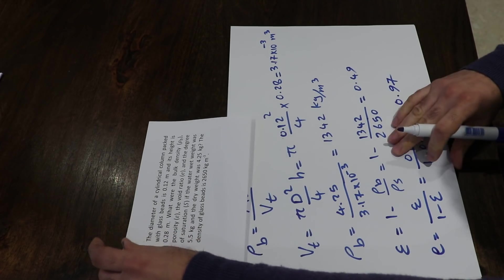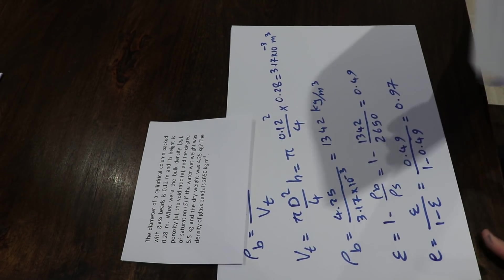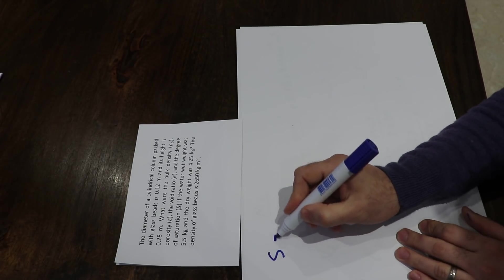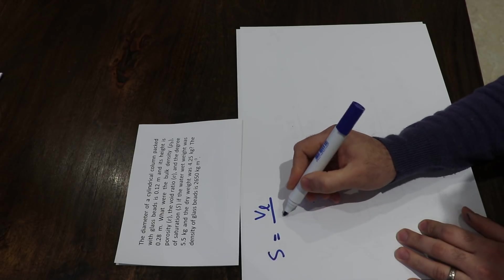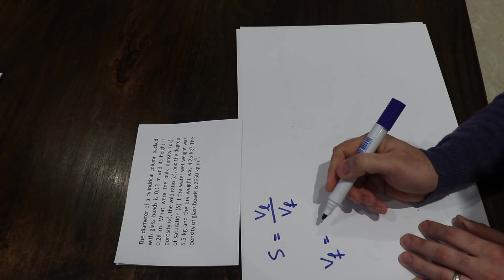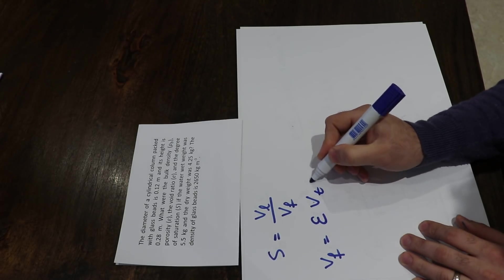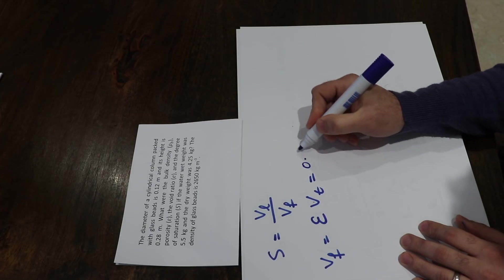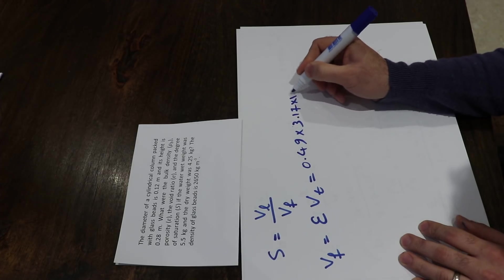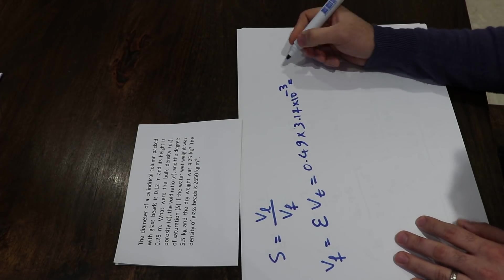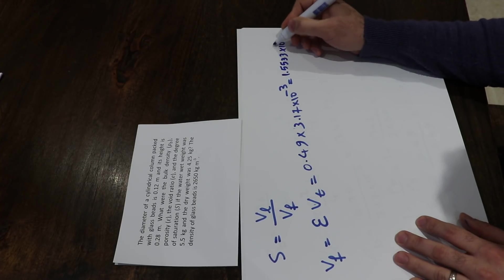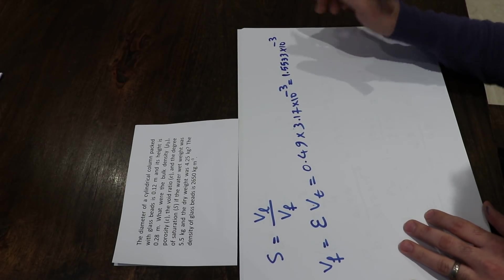The last part of the question is about water saturation. The saturation S equals the volume of liquid divided by void volume. The void volume equals porosity times total volume, which is 0.49 times 3.17 × 10⁻³, giving a void volume of 1.5533 × 10⁻³ cubic meters.